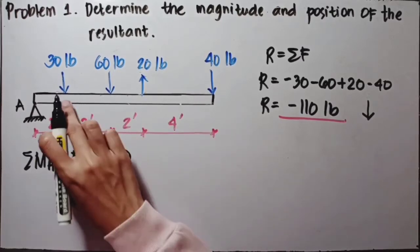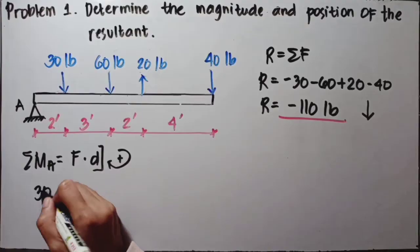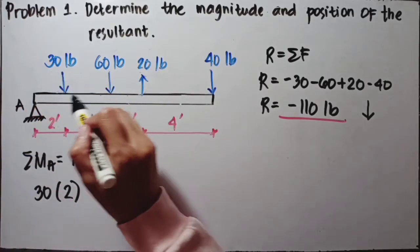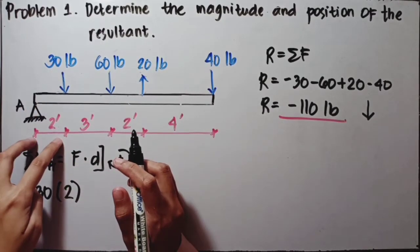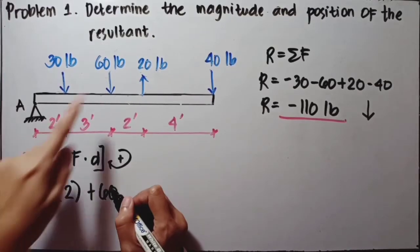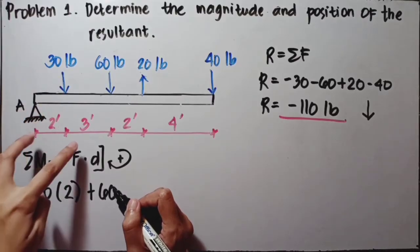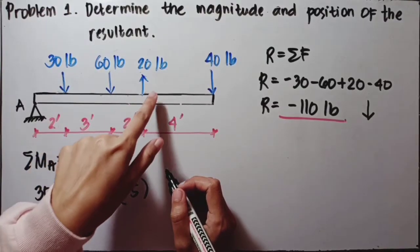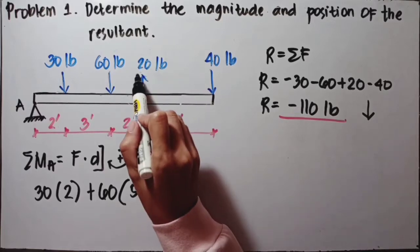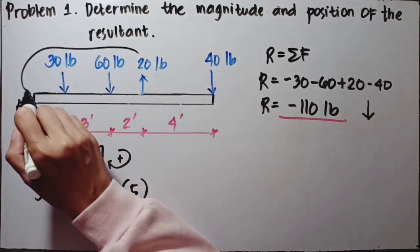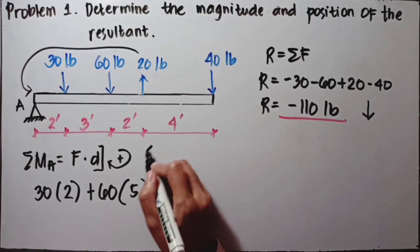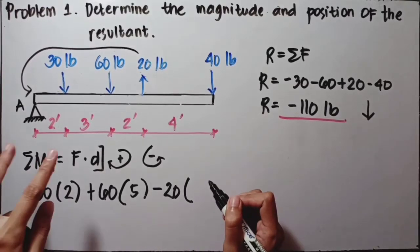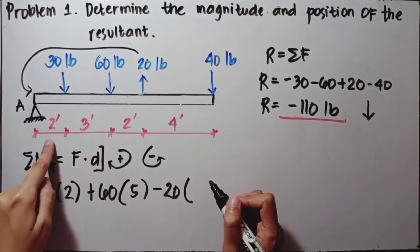Starting with the 30-pound force: 30 times 2, positive because its rotation from point A is clockwise — the moment arm is 2. Then plus 60, also positive clockwise, with a distance of 5 inches. For the 20-pound force, its rotation is counterclockwise, so it's negative: negative 20 times its moment arm of 7 inches, which is 2 plus 3 plus 2.